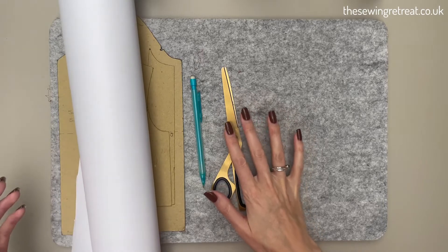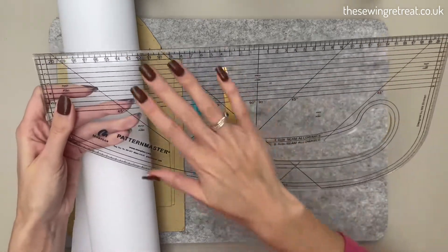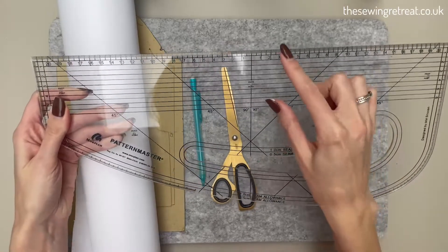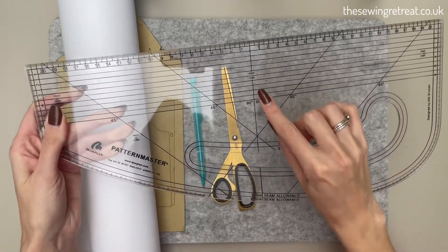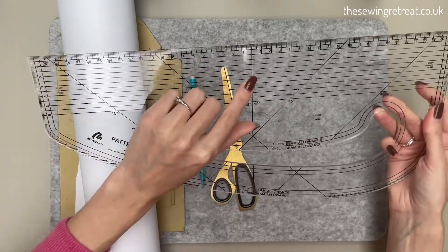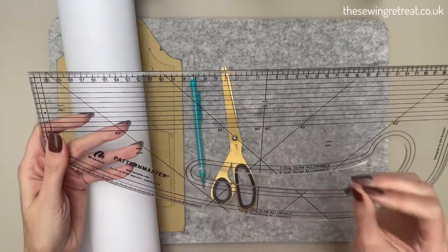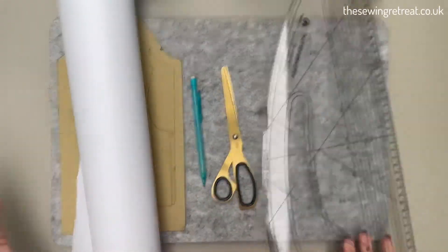With a pattern cutting ruler, you'll see it's got increment lines, and that makes it really easy to add any seam and hem allowances. That's why getting a pattern cutting ruler will really speed up the pattern cutting process.